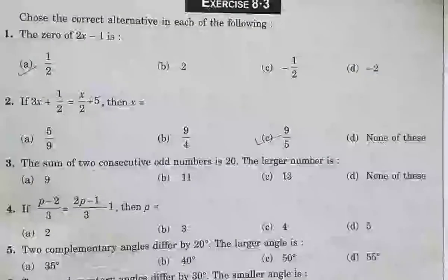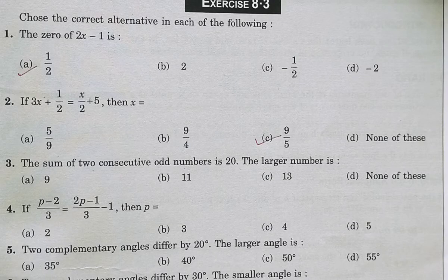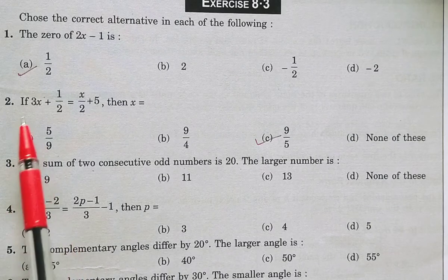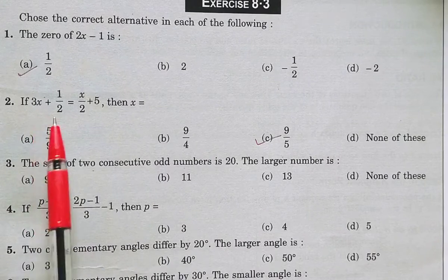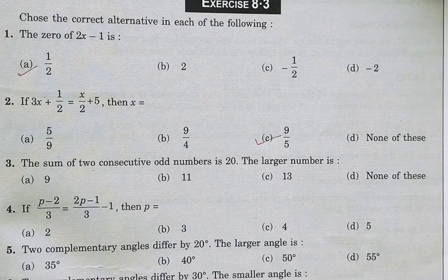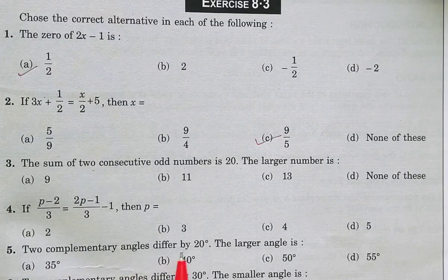Now question number 4: if (p−2)/3 = (2p−1)/3 − 1, then find the value of p. We did the same type of condition in question number 2, but here there is a minus sign instead of a plus sign. So this is your assignment work — I will ask these questions in the question hour, so be careful.